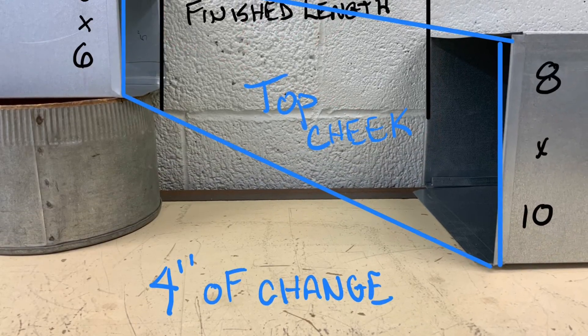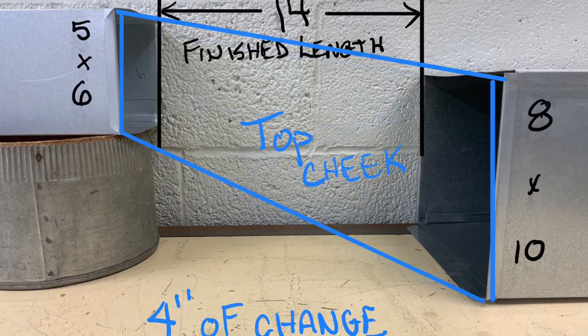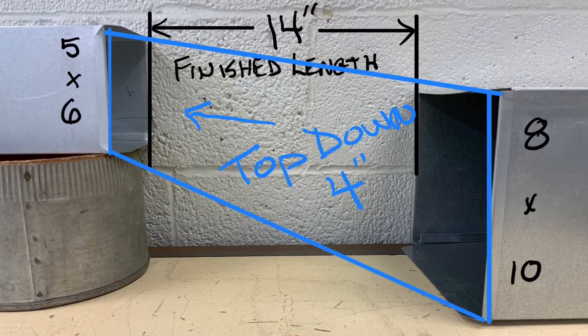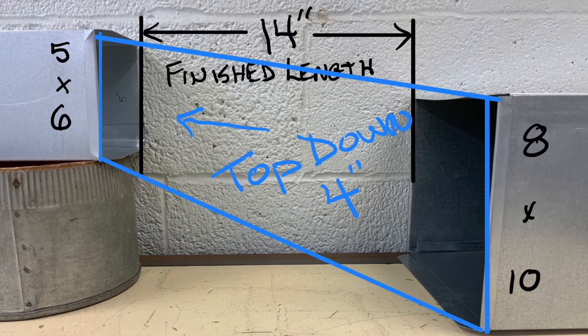This piece will be the top cheek and we see it has a four inch slope. It can also be called top down four inches.